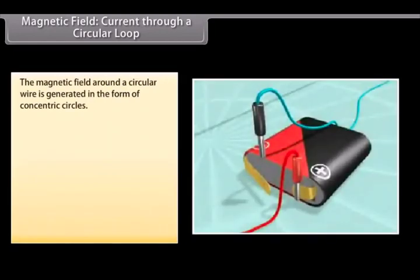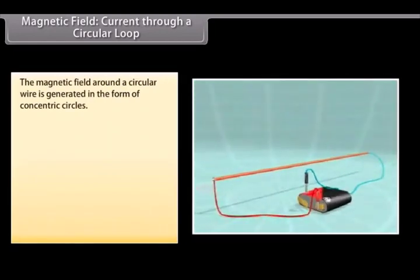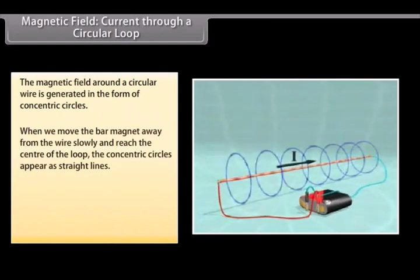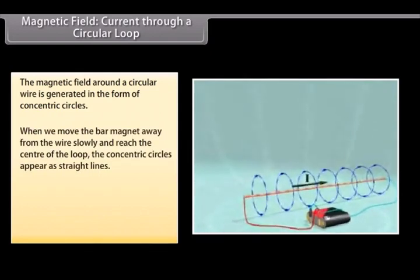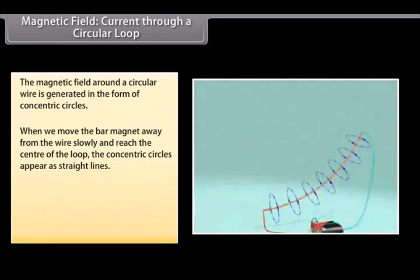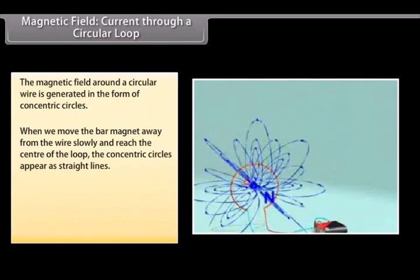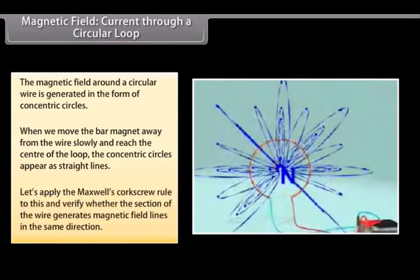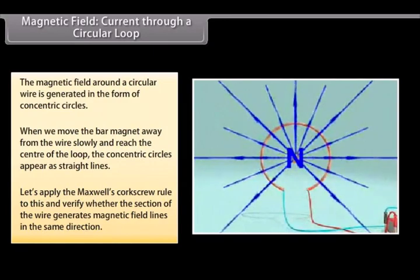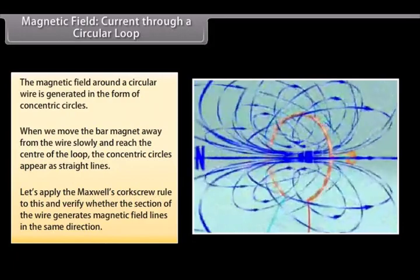Let us now look at what happens when the wire through which we passed the current is placed in a circular manner. The magnetic field around it is generated in the form of concentric circles. Try moving the bar magnet away from the wire slowly. By the time we reach the center of the loop, the concentric circles appear as straight lines. Now try applying Maxwell's corkscrew rule to this and check whether every section of the wire is able to generate magnetic field lines in the same direction.